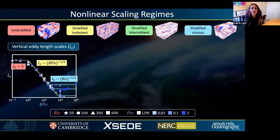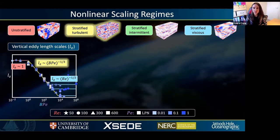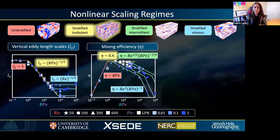These four regimes are associated with various different scalings that can be empirically deduced from the data. In the interests of time today we're going to focus on the yellow stratified turbulence regime, where we observe a clear relationship for the vertical eddy length scales Lz, which are found to scale as BPe to the minus a third. We've also investigated the mixing efficiency eta.